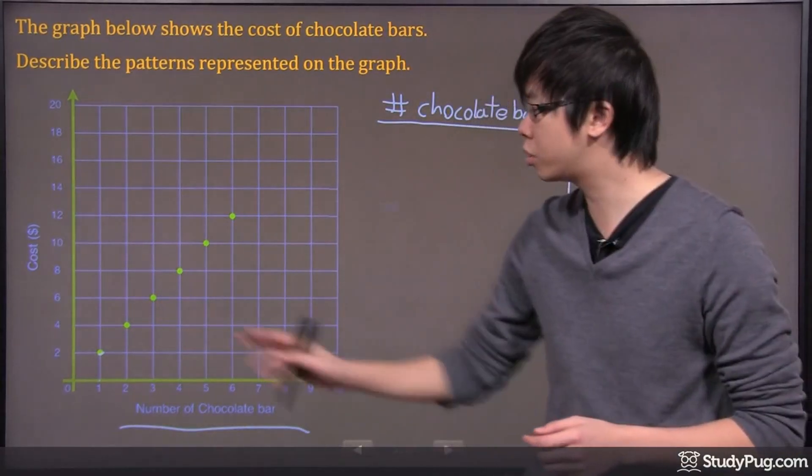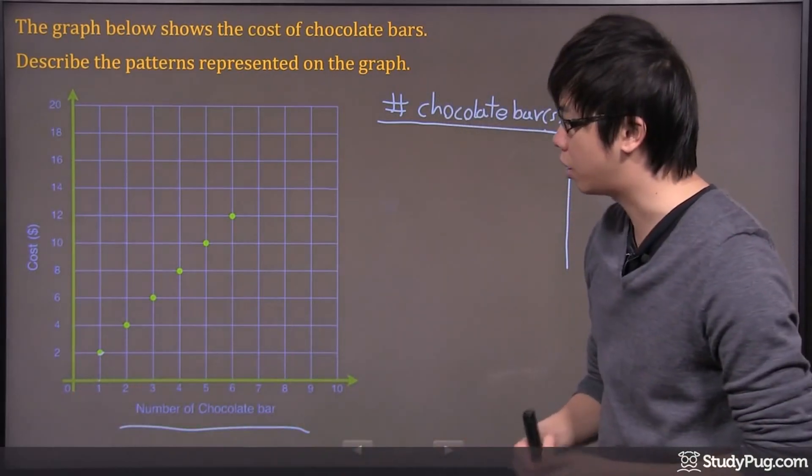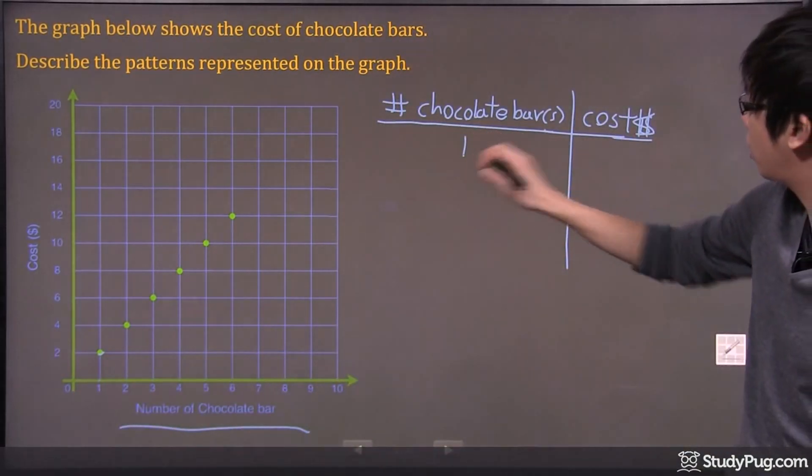These dots are telling you the number of chocolates and their price according to the number of chocolates you're buying. Let's say, for example, if you have 1 chocolate bar right here, let me just fill in the table right here for you.